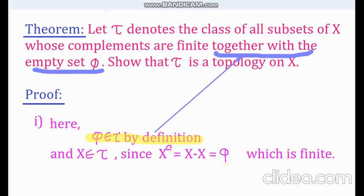Here the complement of x is x minus x, which is the empty set phi. And since it has no element, it is finite. So x belongs to tau. Hence tau satisfies axiom number 1.